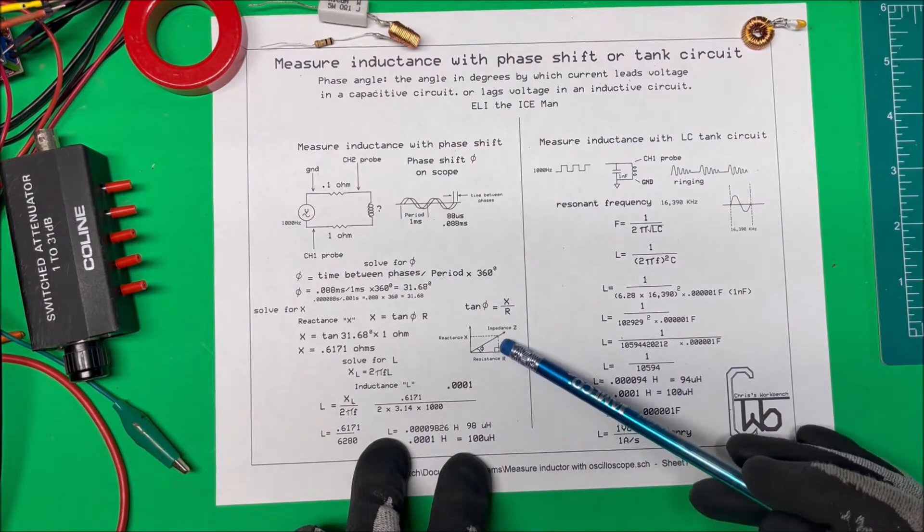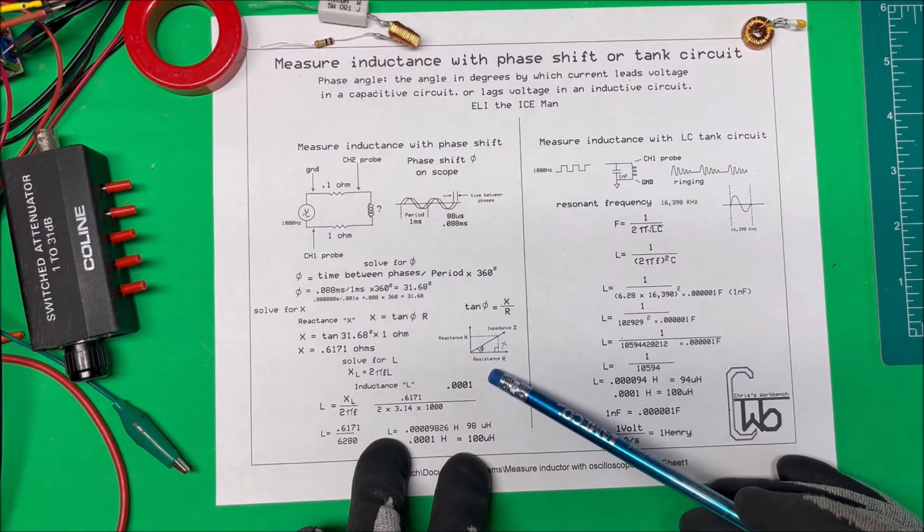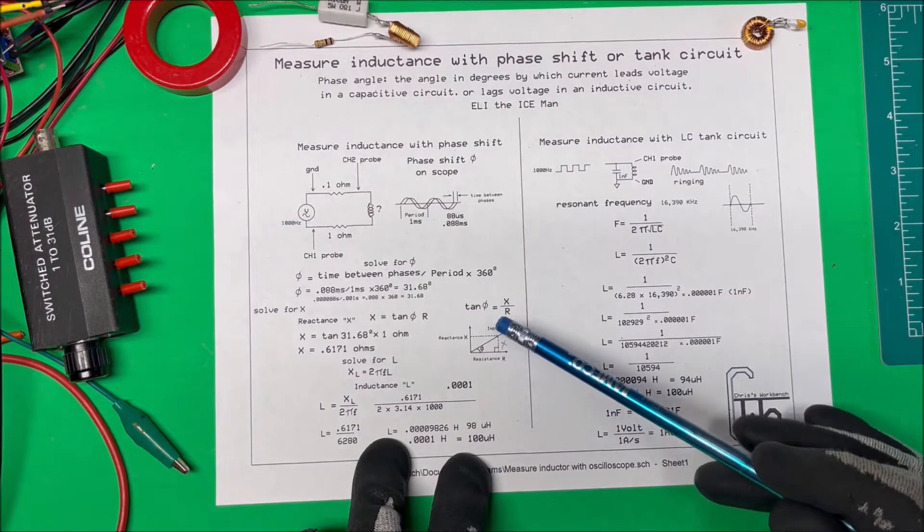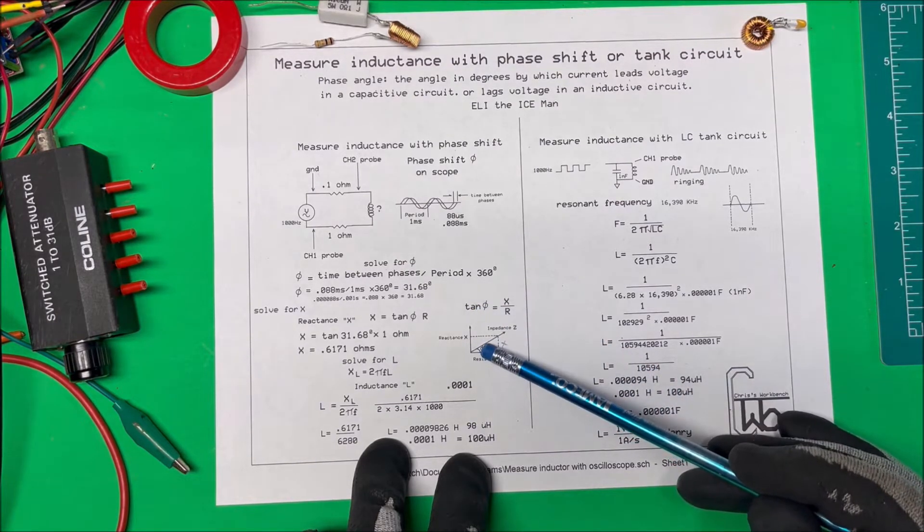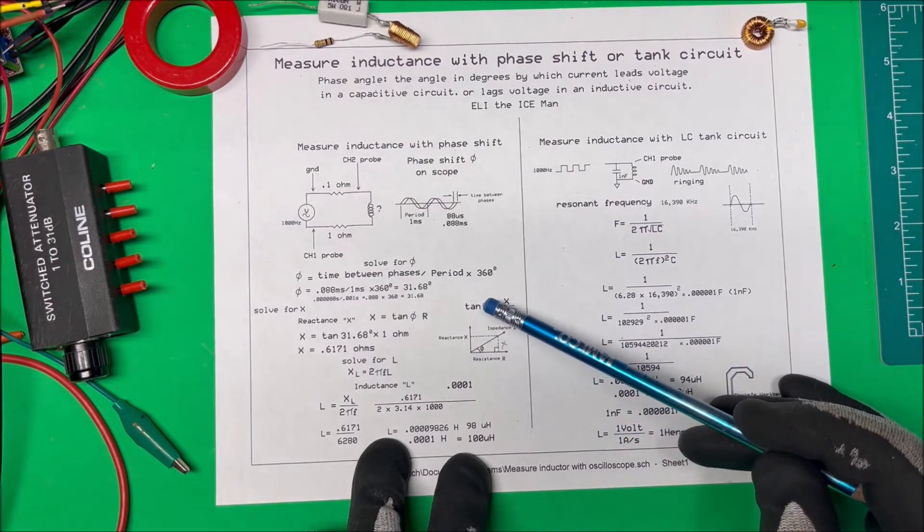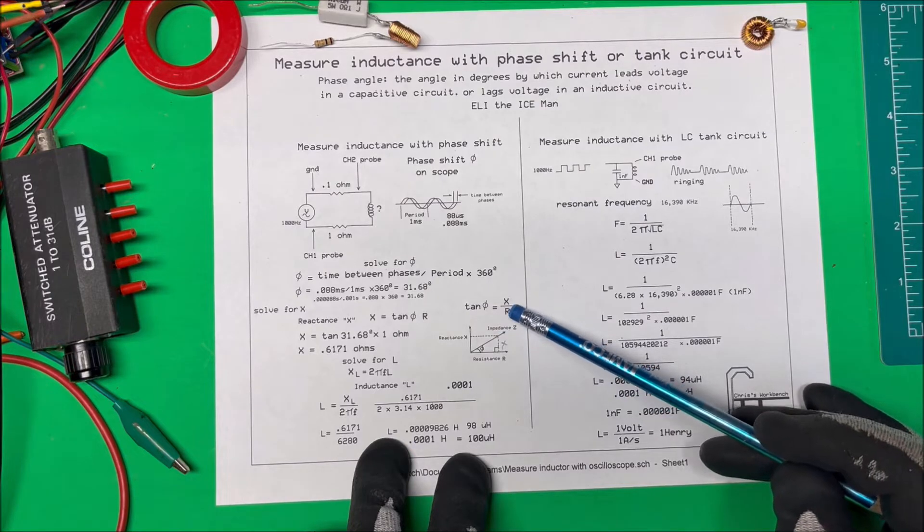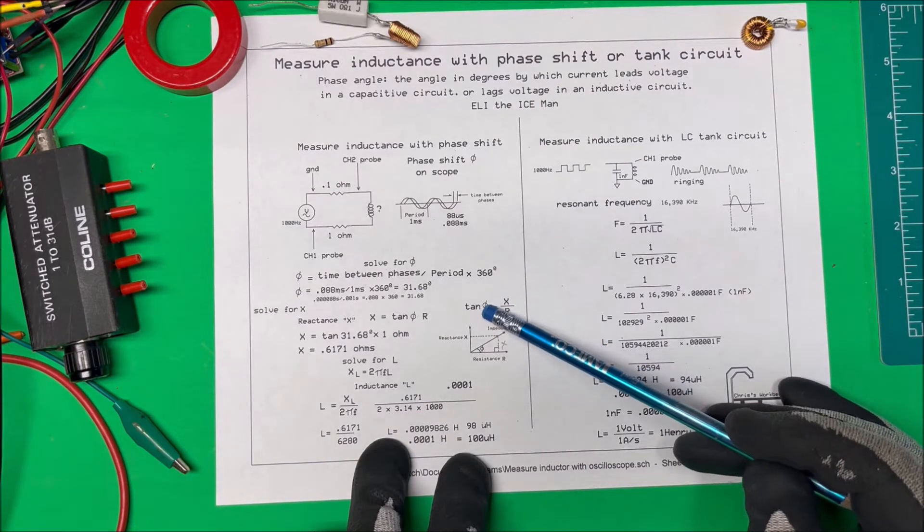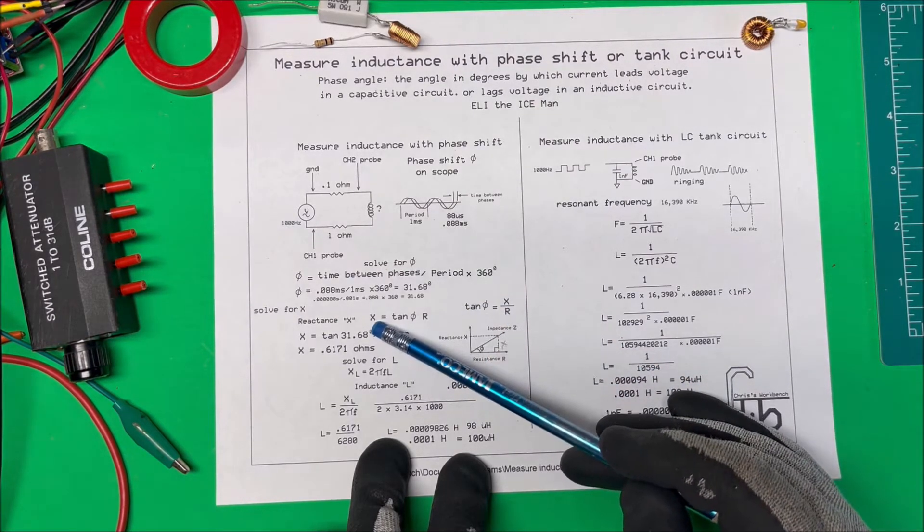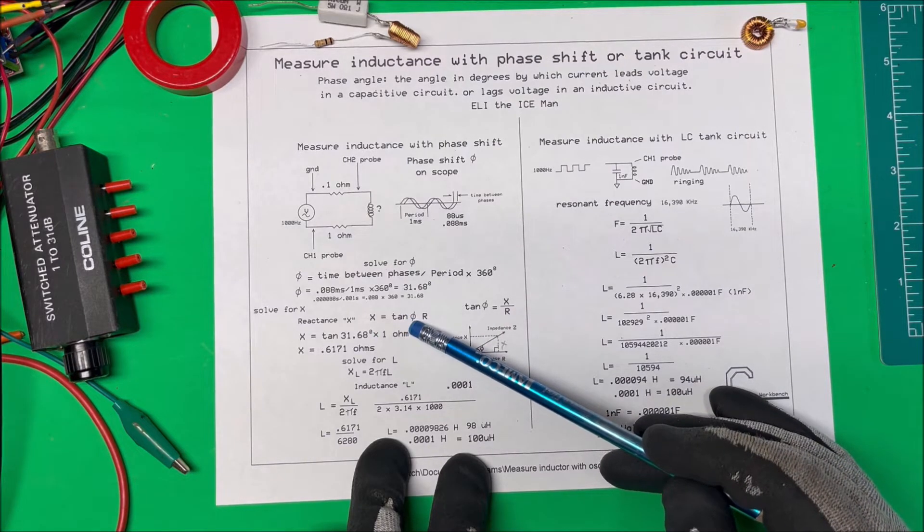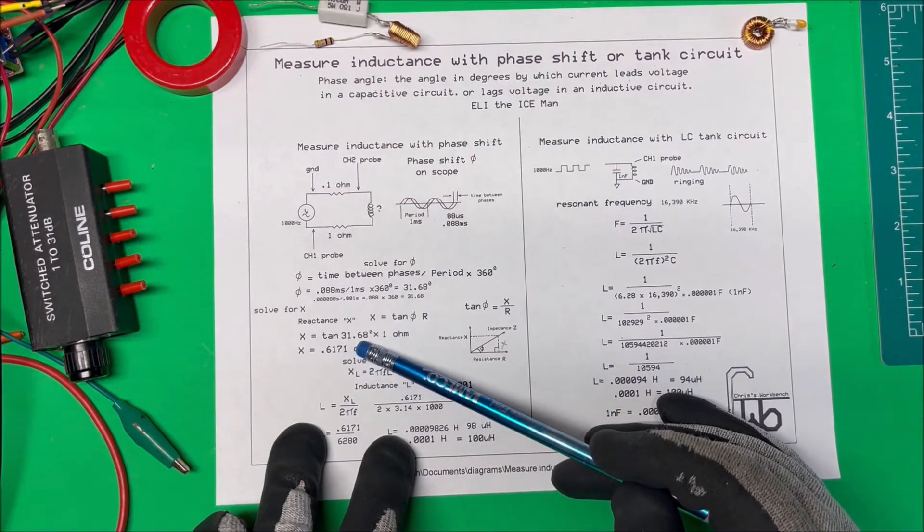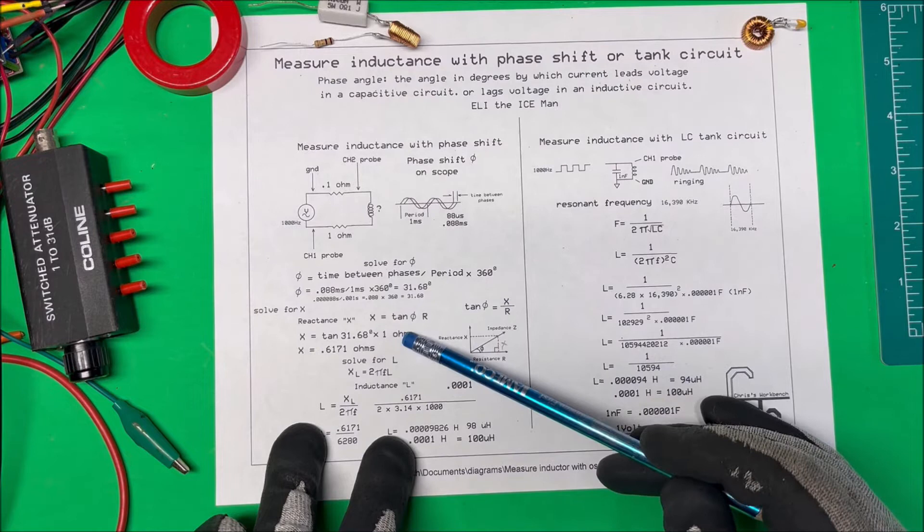Here's a little power triangle. We have resistance on this side and reactance here. The tangent of the angle is equal to X over R. We know R and the angle, so we need to find X, our reactance. X equals tangent of the angle times R. The tangent of 31.68 degrees times one ohm is 0.6171.